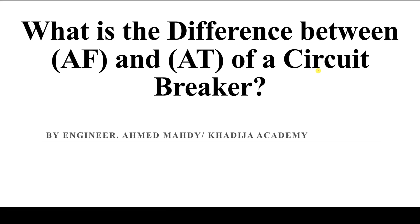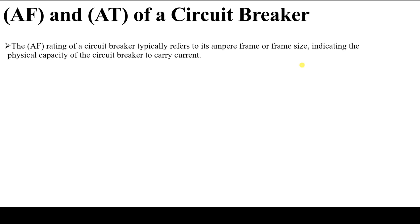Starting with AF — AF simply represents ampere frame. The AF of a circuit breaker typically refers to the ampere frame or frame size. This indicates the physical capacity of the circuit breaker to carry current. Simply, we can think of AF as the maximum current that can be interrupted by the circuit breaker.